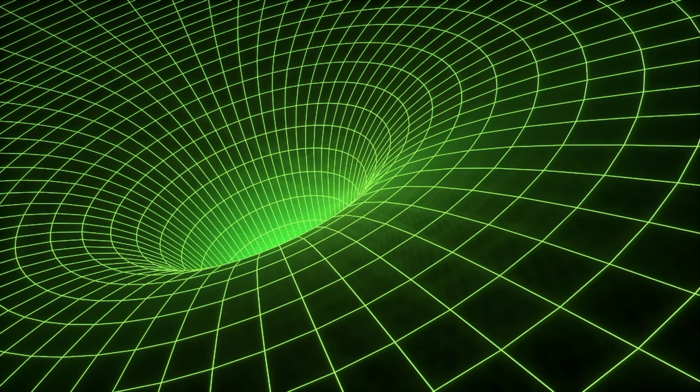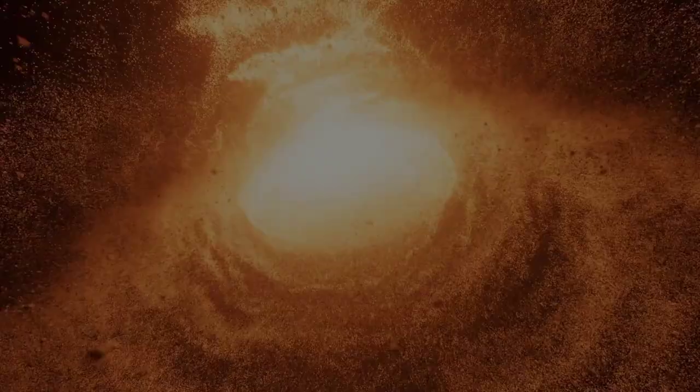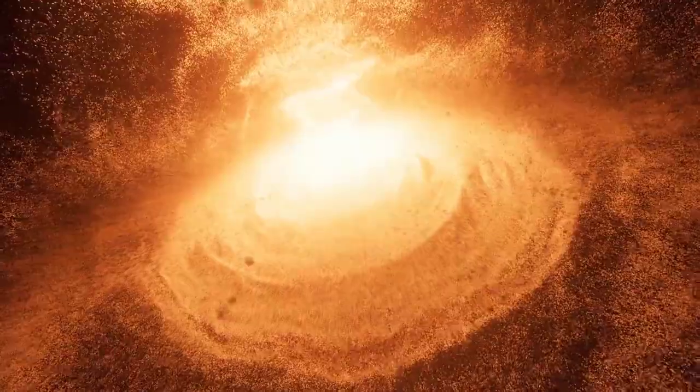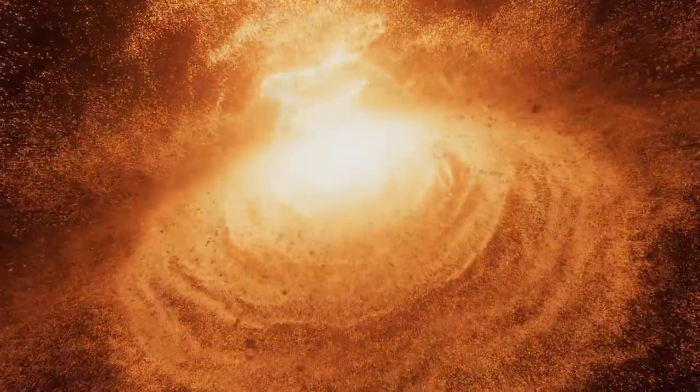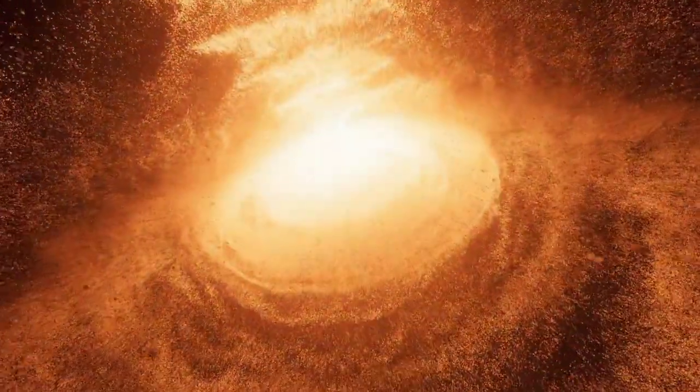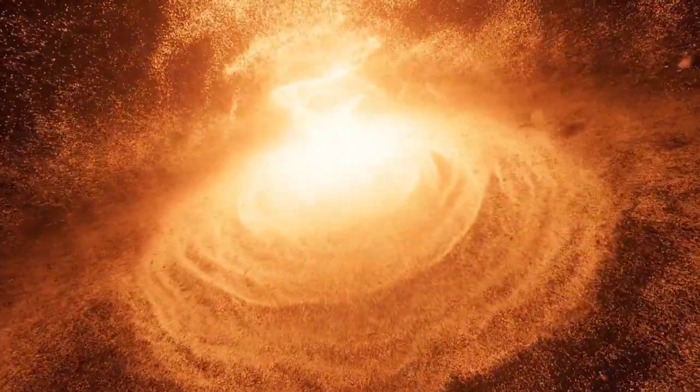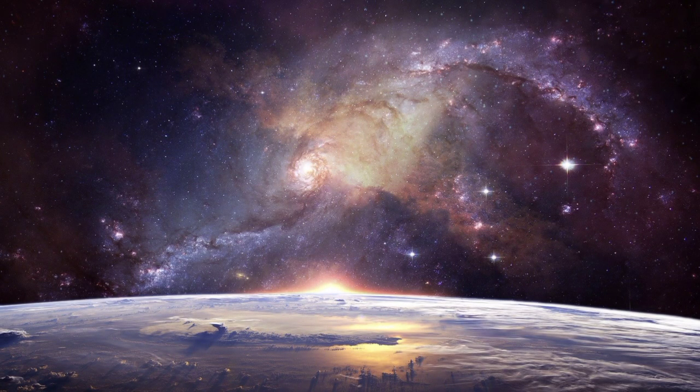Black holes of stellar mass form when very massive stars collapse at the end of their life cycle. Only the most massive stars, those of more than three solar masses, become black holes at the end of their lives.